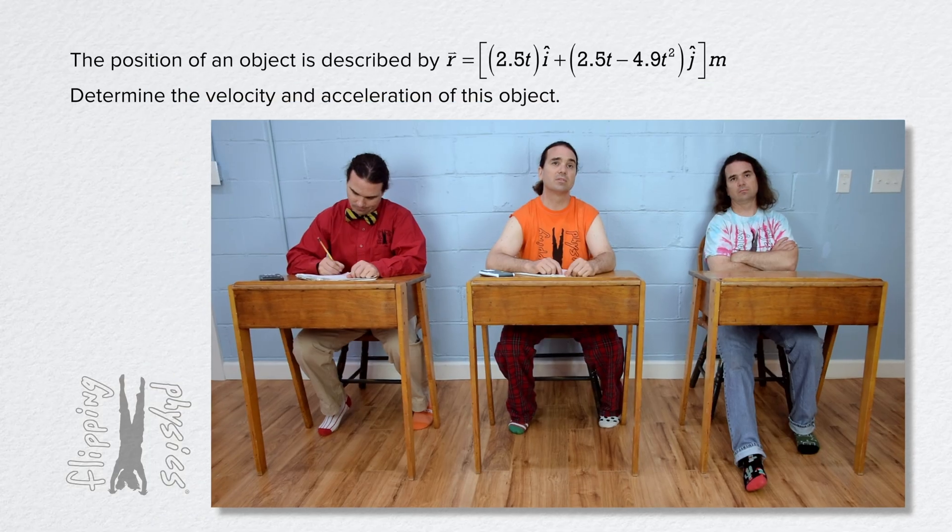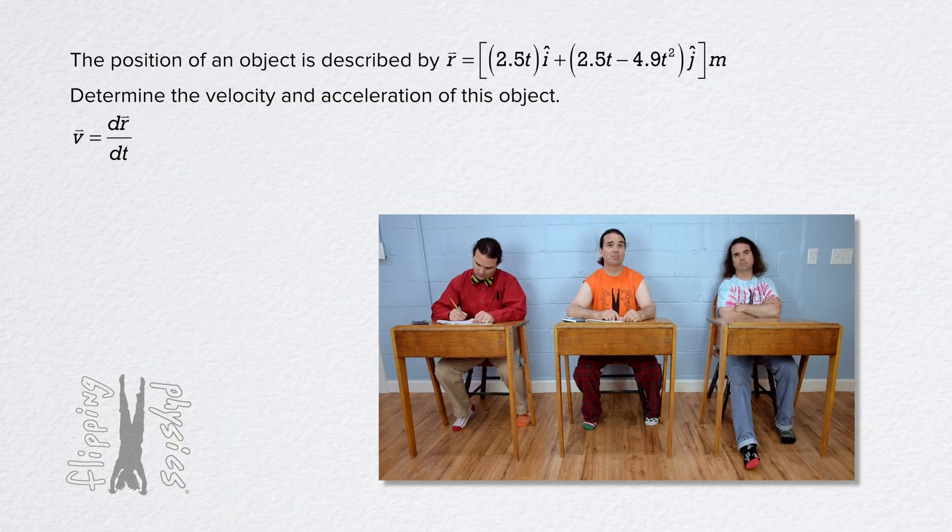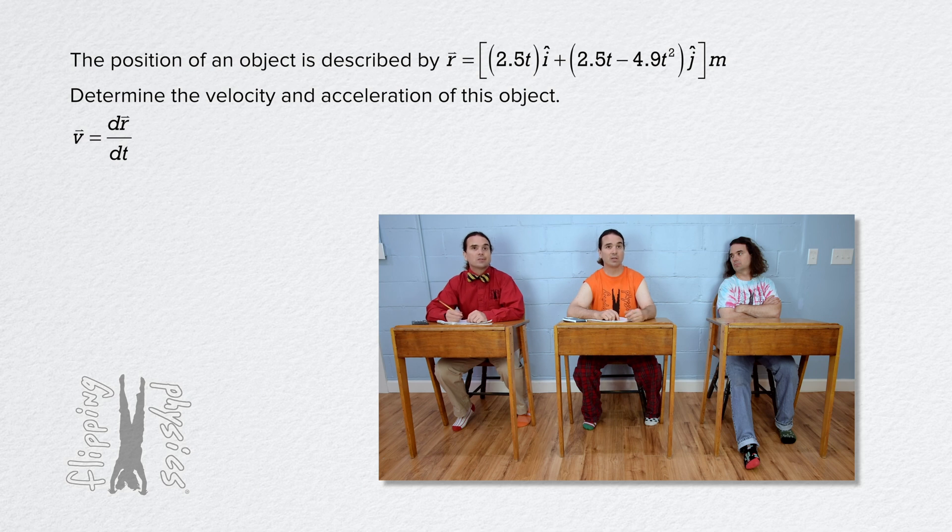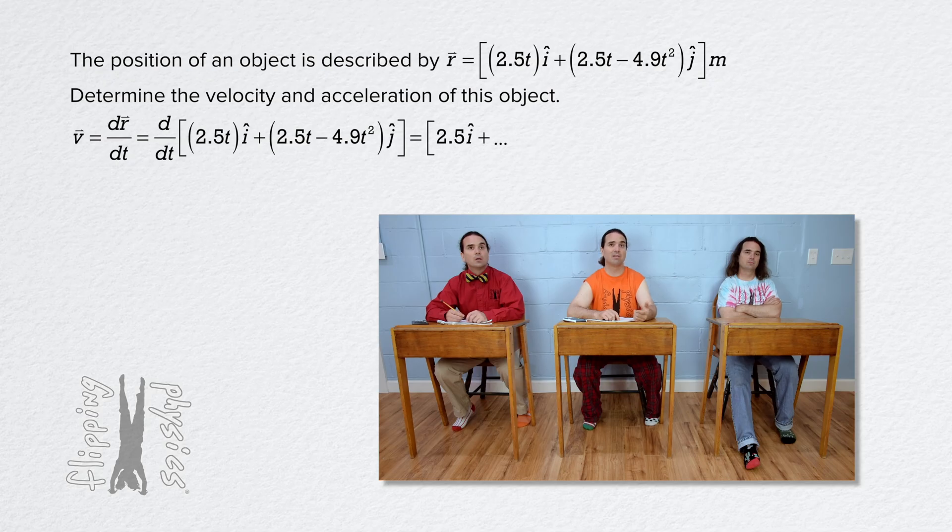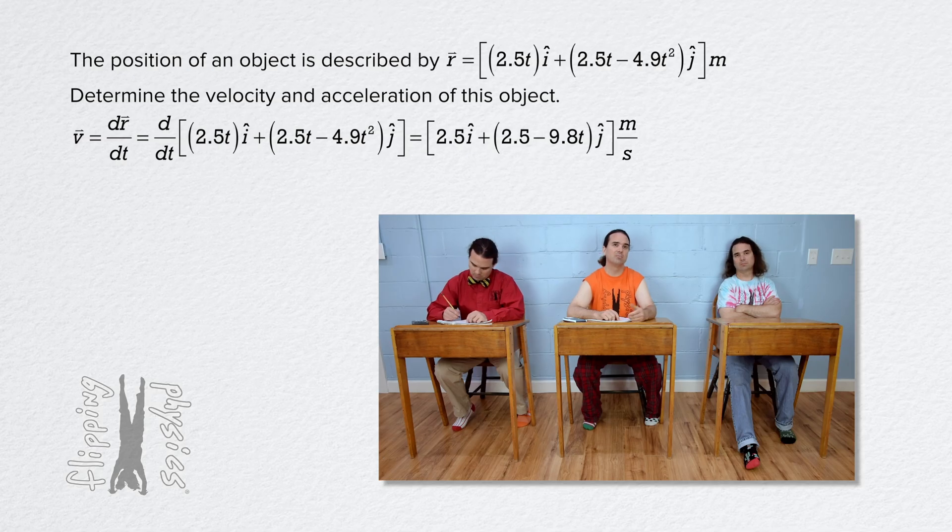Velocity is the derivative of position with respect to time. So velocity equals the derivative of that equation with respect to time. That equals 2.5i plus the quantity 2.5 minus 2 times 4.9 or 9.8t all times j, all in meters per second.